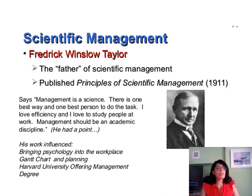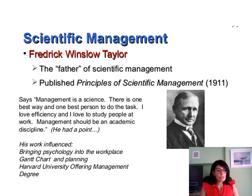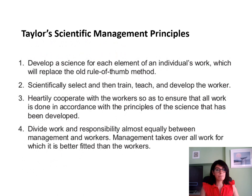Another key theorist in the history of management is Frederick Winslow Taylor, known as the father of scientific management. He published The Principles of Scientific Management in 1911. He believed there is one best way to do a job and one best person to do that job, and was very much focused on efficiency and studying people. He firmly believed management should be an academic discipline. His work was so influential that he brought psychology into the workplace, and even Gantt charts used in planning, which every modern project plan now uses.